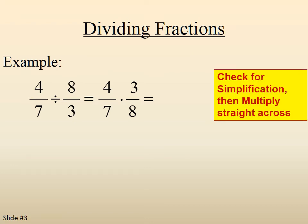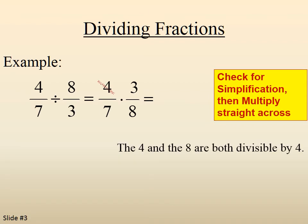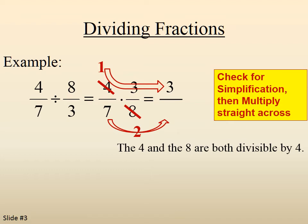We check for simplification. In this case we notice that the four and the eight are both divisible by four. There is no other simplification. So then we multiply numerator times numerator: one times three is three. And then we multiply denominator times denominator: seven times two is fourteen.